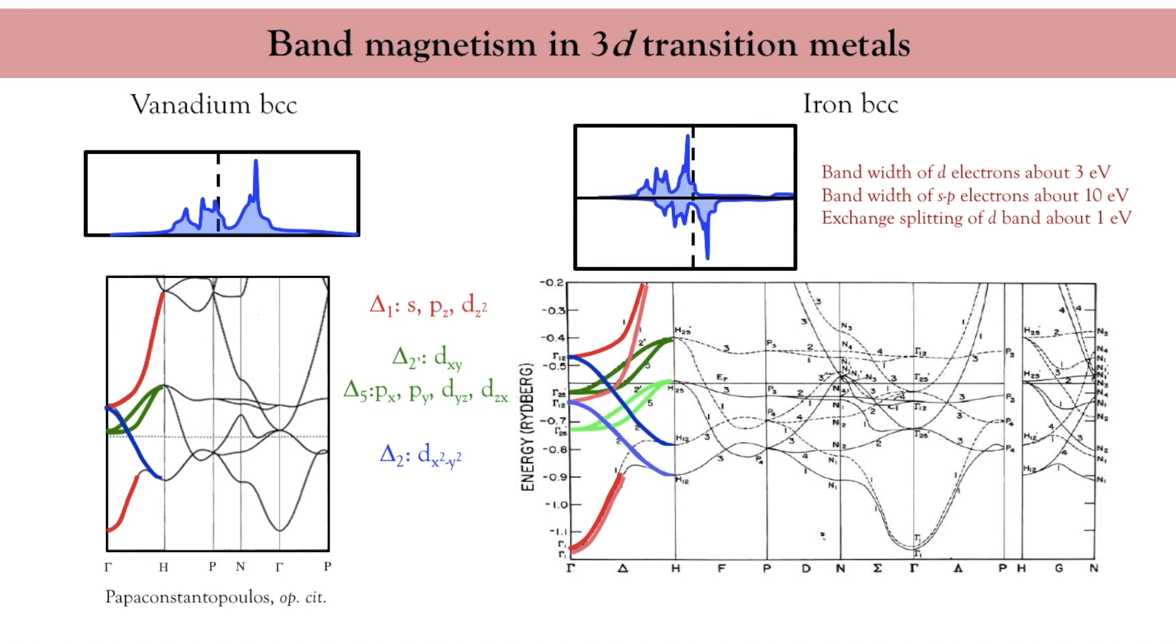Now, I move on to iron BCC, which has the same crystal structure as vanadium, but displays ferromagnetism. The density of states looks similar to vanadium, although narrower, and spin split due to electron-electron interaction. Because the crystal symmetries are the same, iron also shows the same band symmetries as vanadium. Notice that these bands are all spin split due to ferromagnetism. These aspects will be extremely important to discuss the spin transport properties of magnetic transition metals.